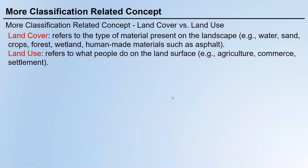Sometimes people use 'land cover,' sometimes 'land use' — usually we consider them the same, but let me clarify the difference. Land cover refers to the type of material present on the landscape: water, sand, crops, forests, wetland, human-made materials such as asphalt. Land cover is very specific — it's about the material.